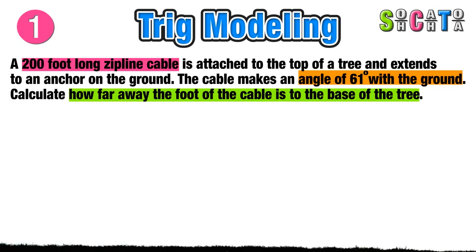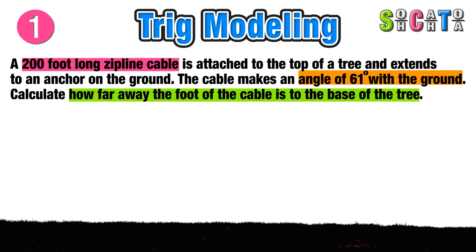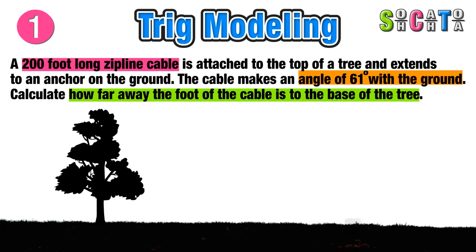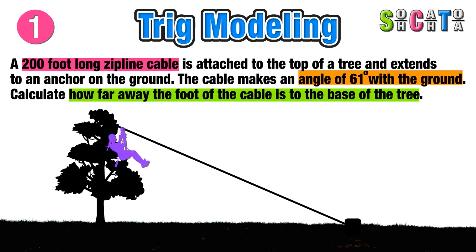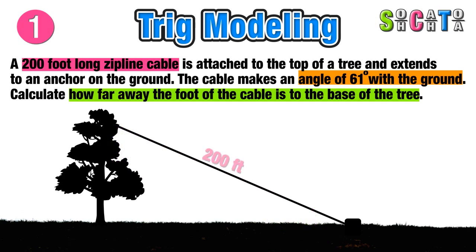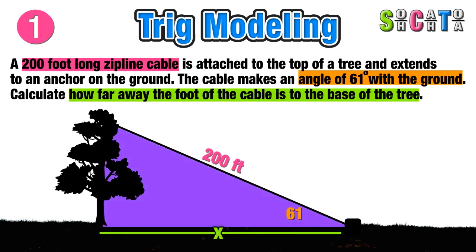Let's visualize this scenario. We have the ground, we have a tree, and we have a zipline cable attached to the top going all the way down to the ground. The zipline cable is 200 feet long, the angle with the ground is 61 degrees, and the distance between the base of the cable and the foot of the tree is our unknown — we are going to call it x.